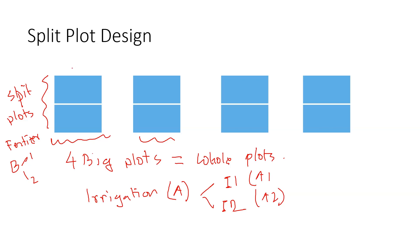I randomly assign the irrigation method to the whole plots. For example, this one gets irrigation method two, this one gets two, this one gets one, and this one gets one — randomizing the irrigation method across whole plots.